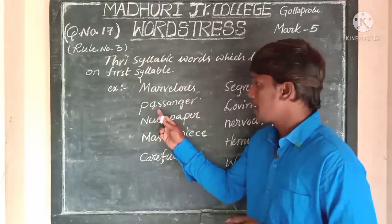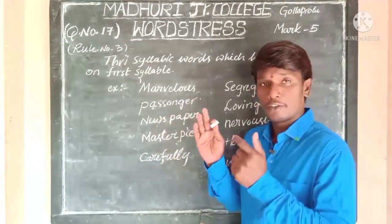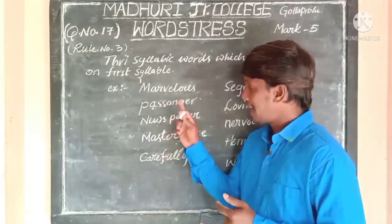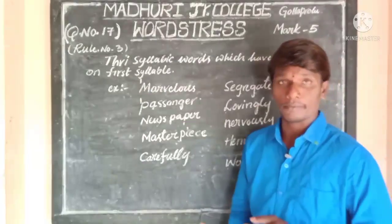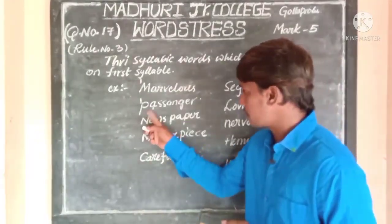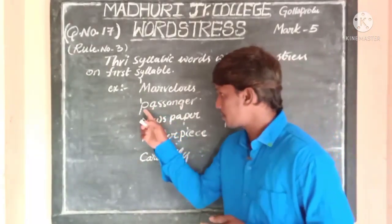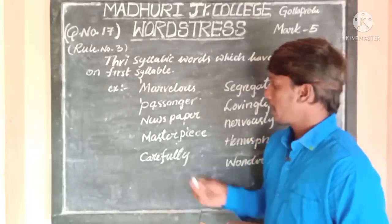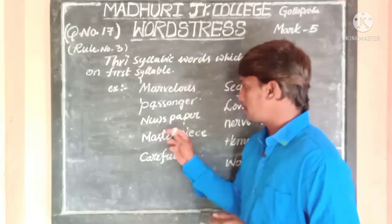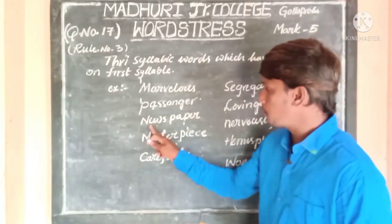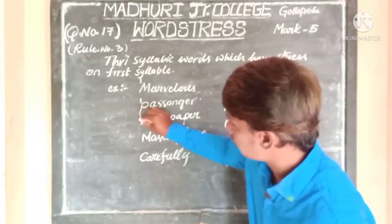The second example is 'passenger.' Passenger — R is also silent, but don't think about R. It is a trisyllabic word, so stress takes place on the first syllable: PAS-sen-ger. Next is 'newspaper' — there are 3 syllables: NEWS-pa-per, so stress is on the first syllable.